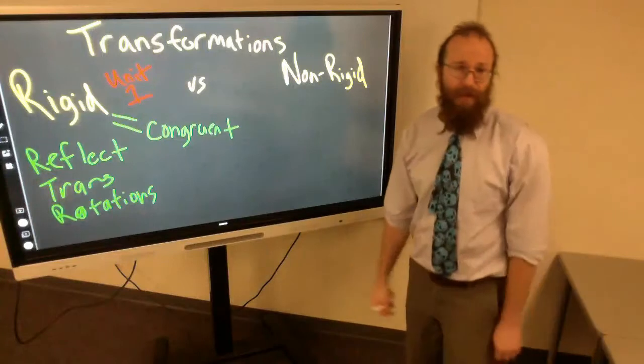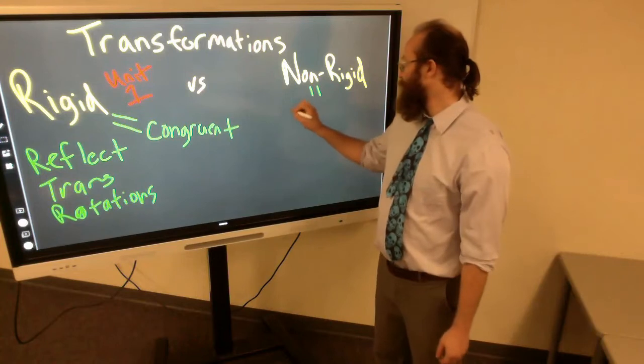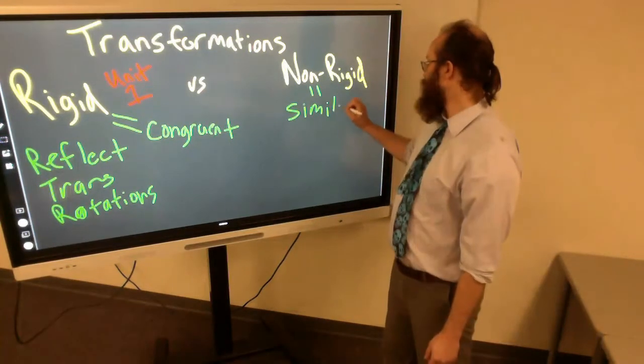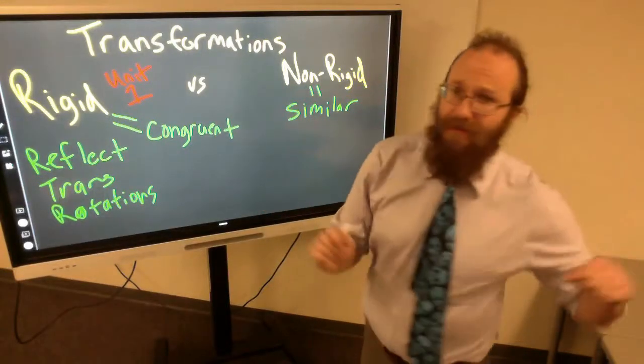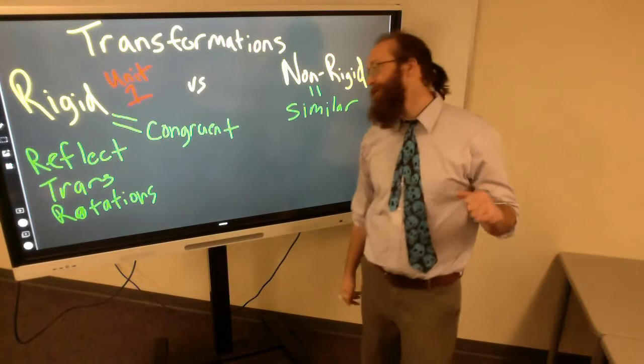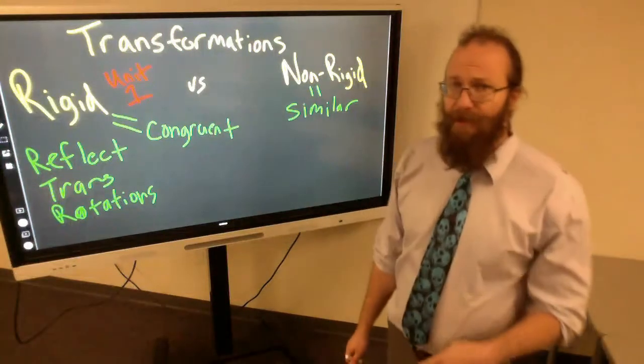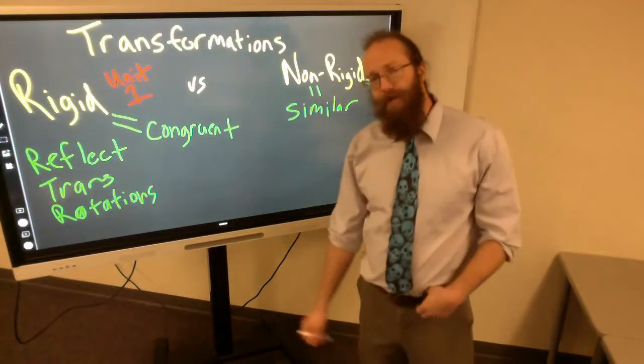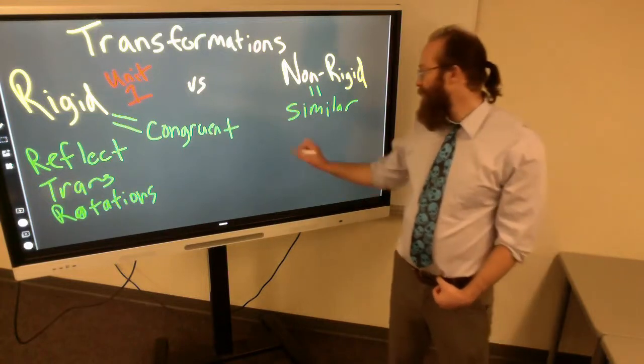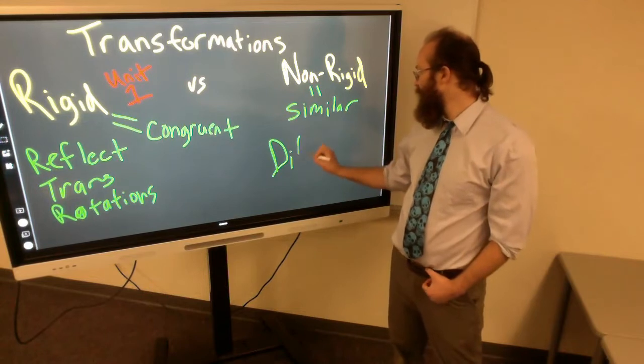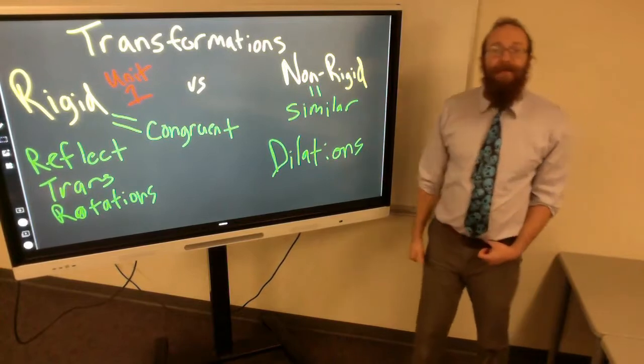A non-rigid transformation makes a similar shape. And remember that we learned a similar shape is something that has the same angles but not the same size, right? So a similar shape is same angles but different size. It can be bigger or smaller. And what we're going to call these bigger and smaller similar things are dilations. And that is the new word of this unit. It is what we're going to be mainly focusing on is a dilation.